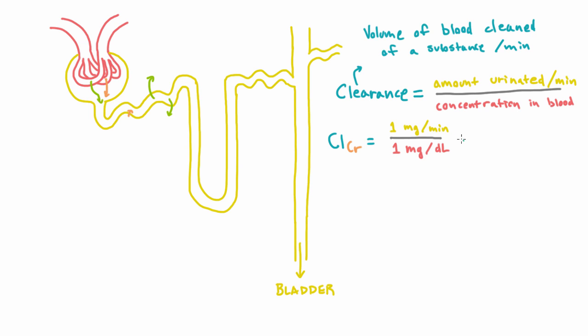And so if you take care of all the units here, you end up finding that this is equal to 1 deciliter per minute, which in terms of milliliters is 100 milliliters per minute.